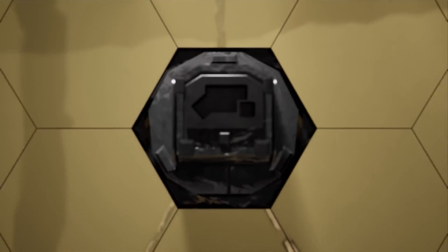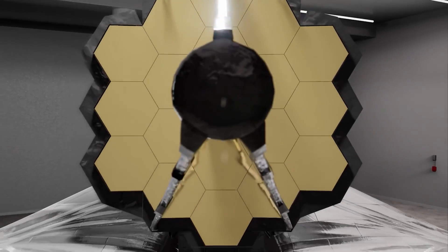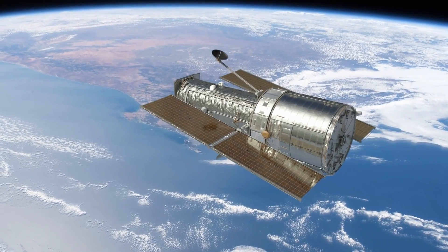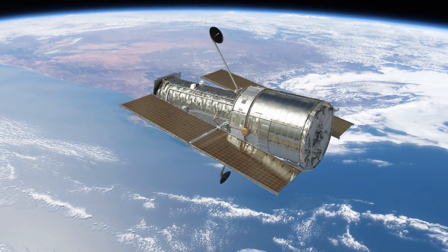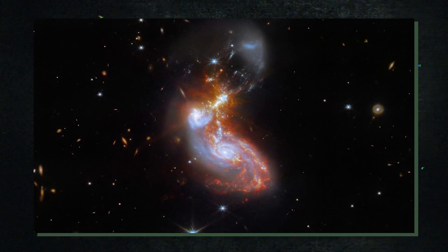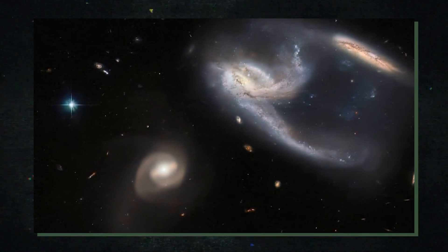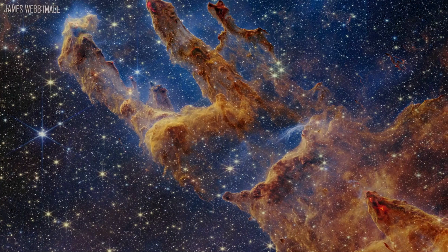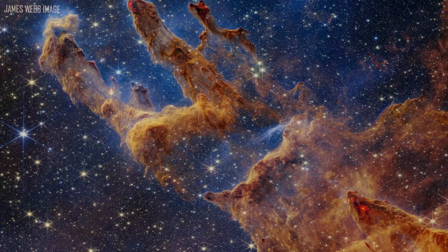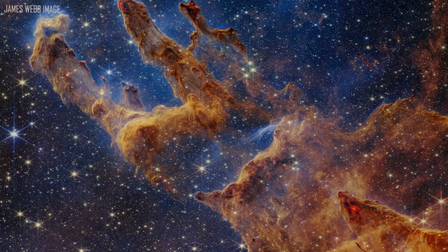Since it began operations, JWST, the Hubble Space Telescope's replacement, has completely altered how we perceive the universe. Many people were aware that the Hubble Space Telescope was not giving us the complete picture. The universe's expansion causes the ultraviolet and visible light emitted by the initial stars and galaxies to be stretched out as it moves towards us, turning it into infrared light by the time it reaches us.